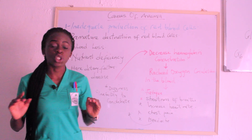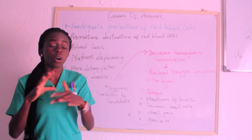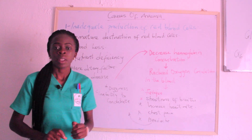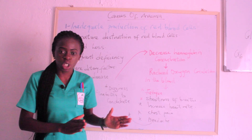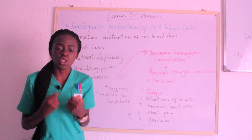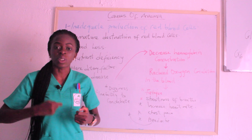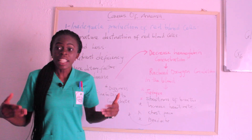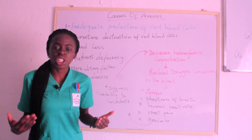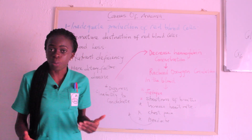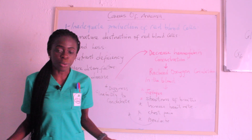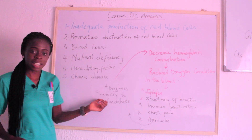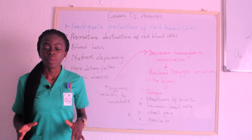One thing important about pathophysiology — you don't have to cram the whole book. The key point is that there is a reduction in hemoglobin concentration, which leads to reduced oxygen circulation in the body, and when there is reduced oxygen, people are unable to carry out activities they used to do before. So there will be fatigue, shortness of breath, increased heart rate, chest pain, headache, dizziness, and inability to concentrate.